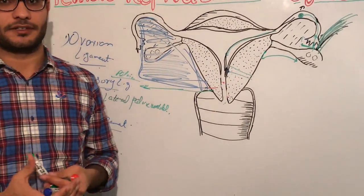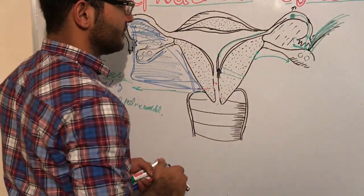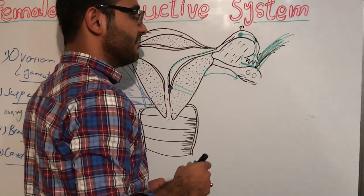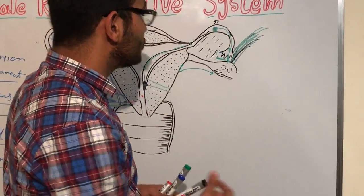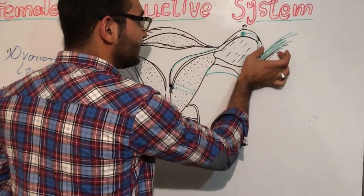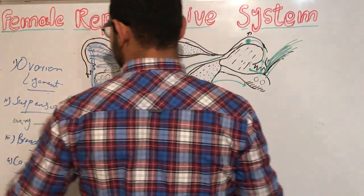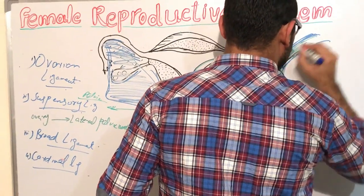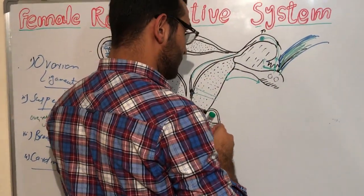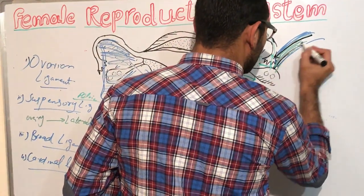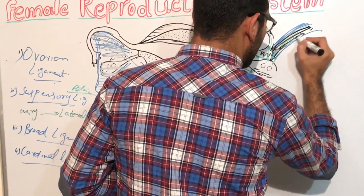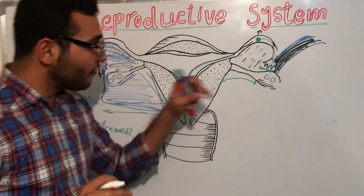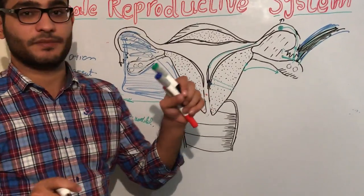The main function of the suspensory ligament is to provide nerve supply, arterial supply, and venous supply to the ovary through the suspensory ligament, also known as the infundibulopelvic ligament.